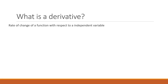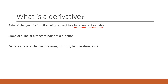Let's start off with the definition of what a derivative is — again, this will be a review. Some definitions: a derivative is a rate of change of a function with respect to an independent variable. That's an important thing to keep in mind — it is with respect to an independent variable. Another definition is the slope of a line at a tangent point of a function. It also depicts a rate of change, and examples of things that go through a rate of change include pressure, temperature, and position.